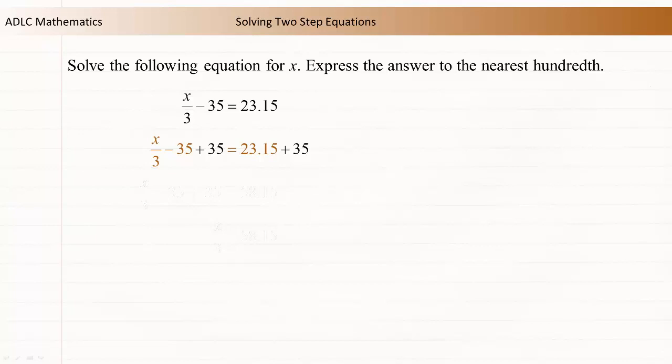Undo the subtraction operation by adding 35 to both sides of the equation. This operation eliminates -35 from the left side. On the right side, 23.15 + 35 = 58.15.